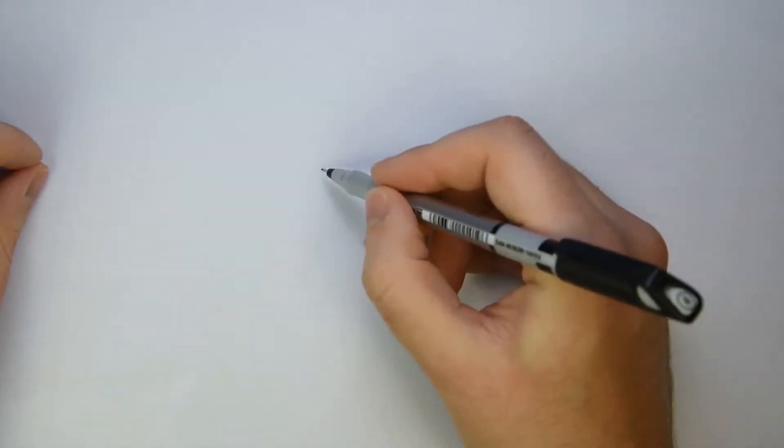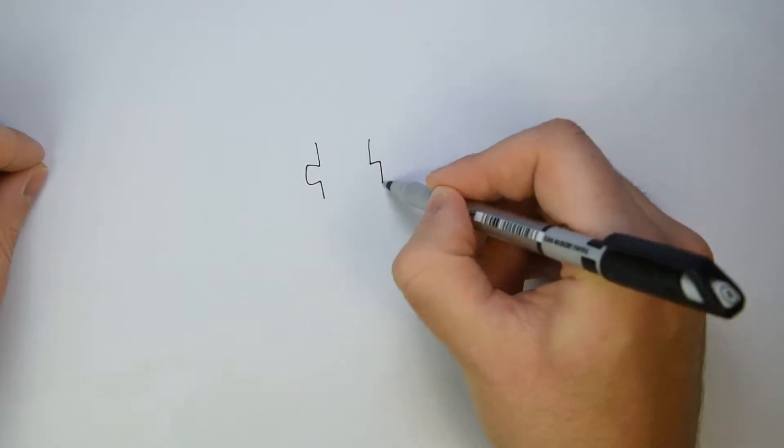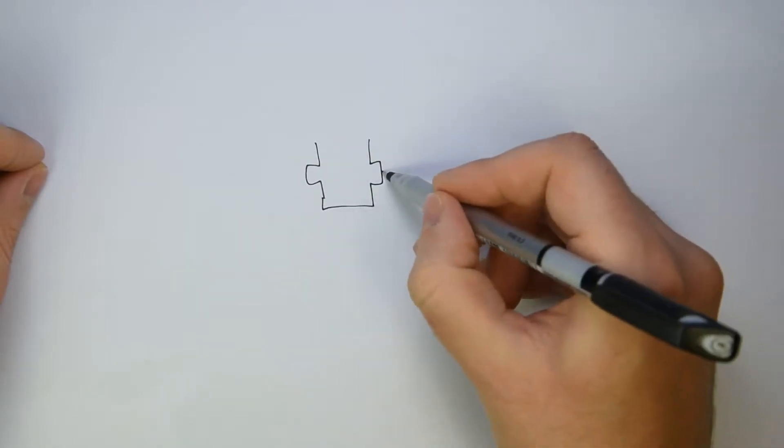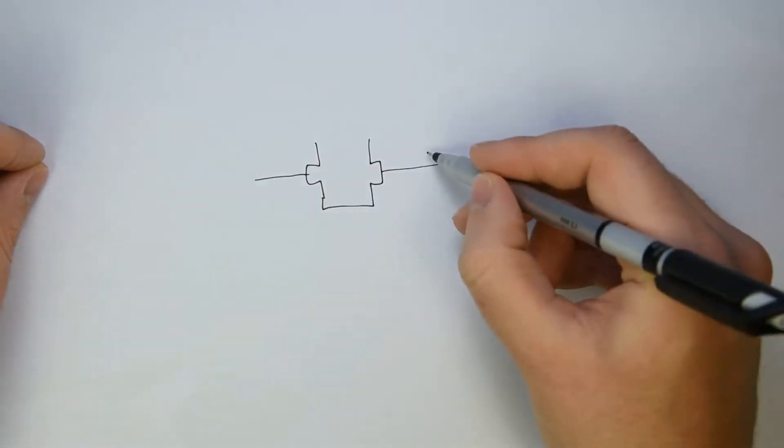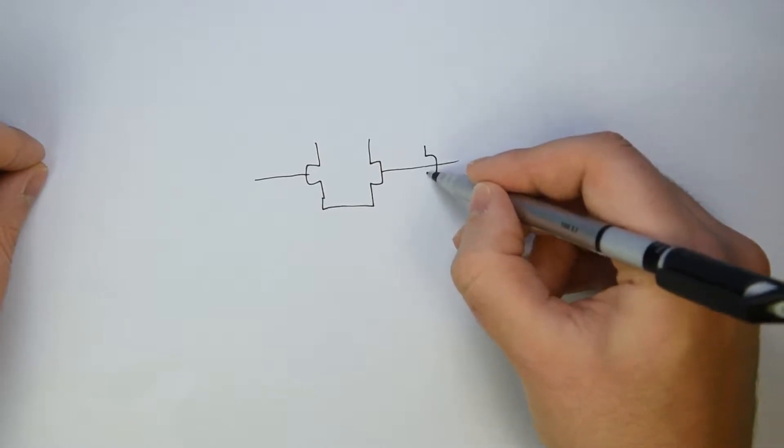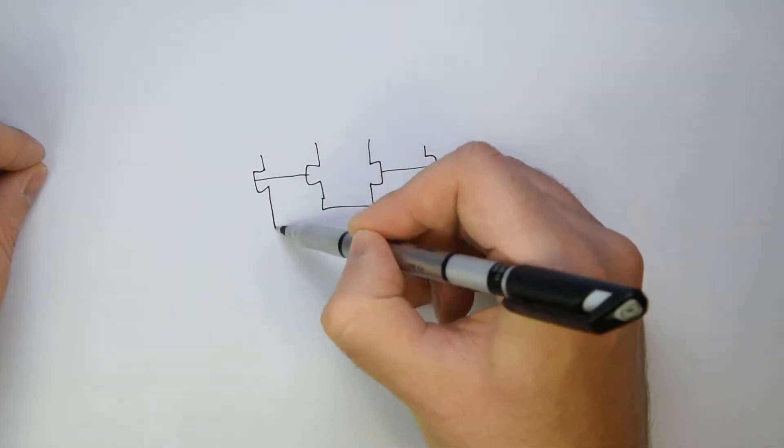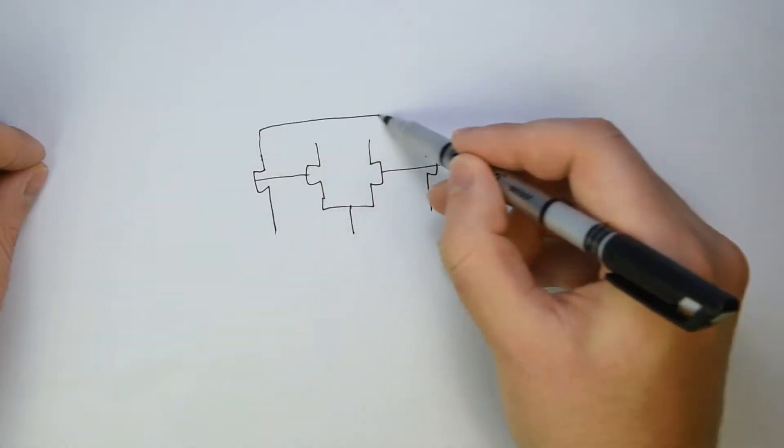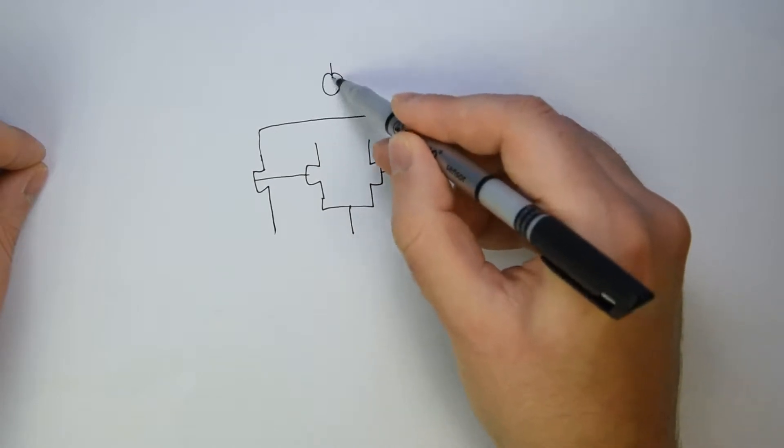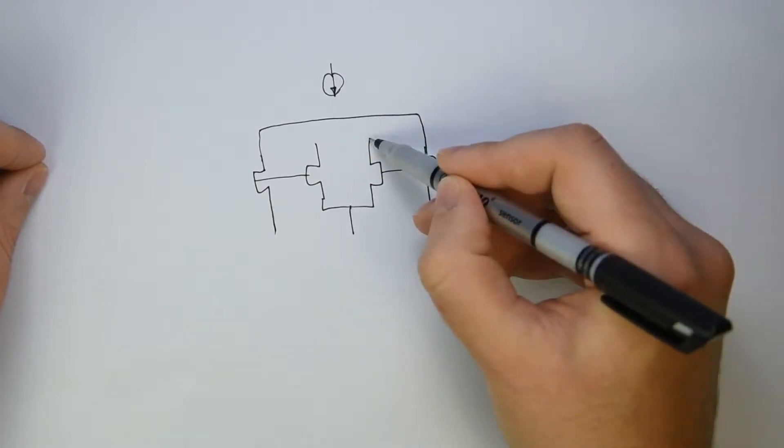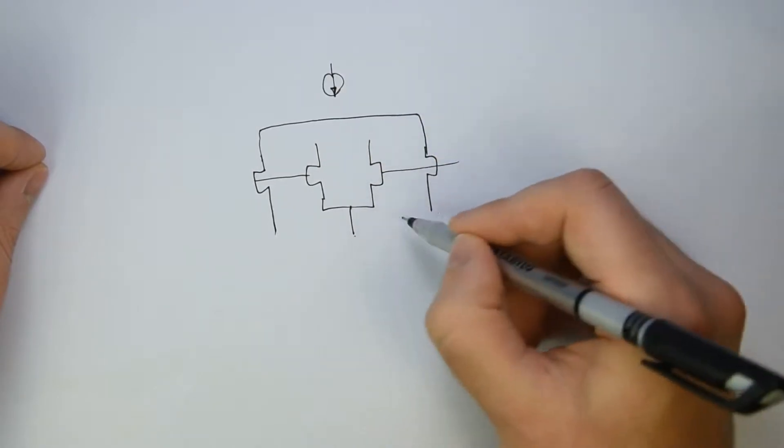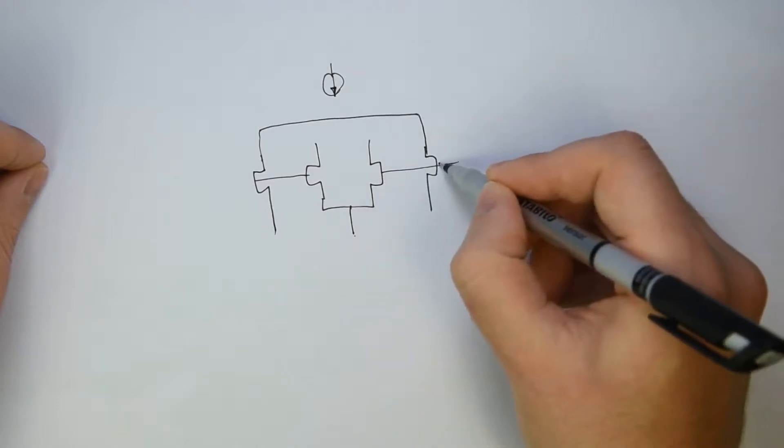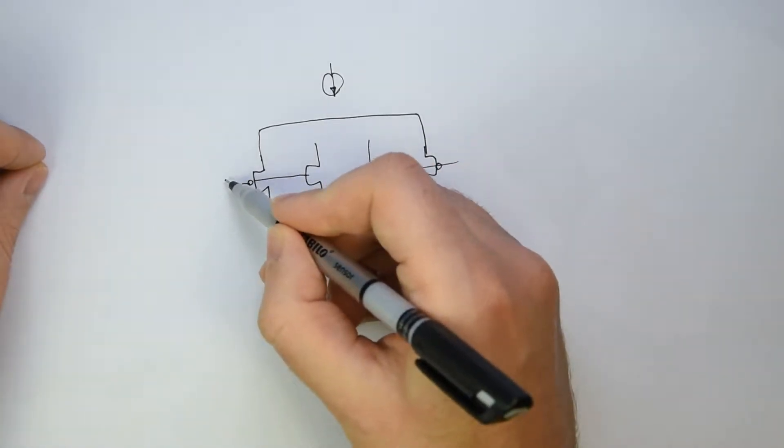Let's make here the drawing of an NMOS plus a PMOS input pair working together in parallel, meaning we have both of them connected to the same input. We can make a drawing something like this. We have an NMOS input pair and also a PMOS input pair connected together on the same inputs of the OPAMP. These are the inputs of the OPAMP.